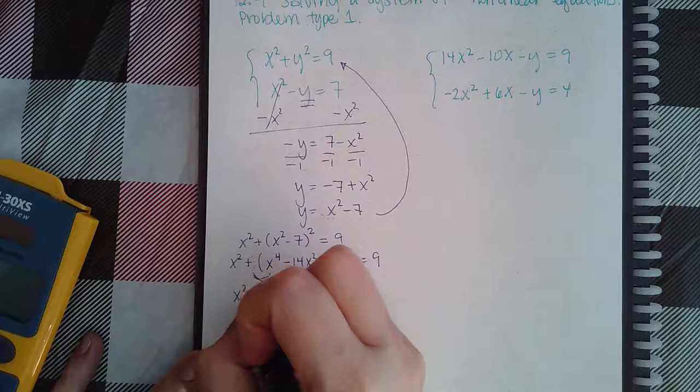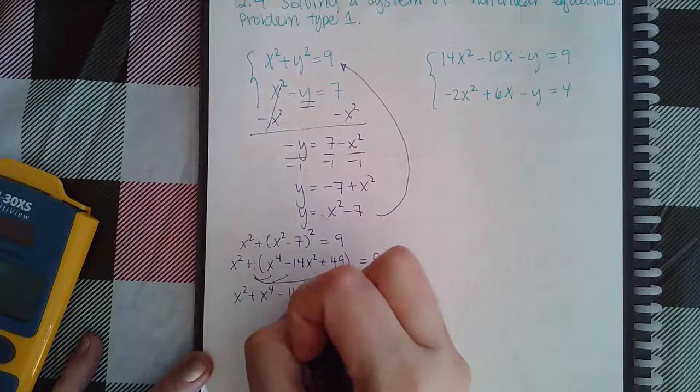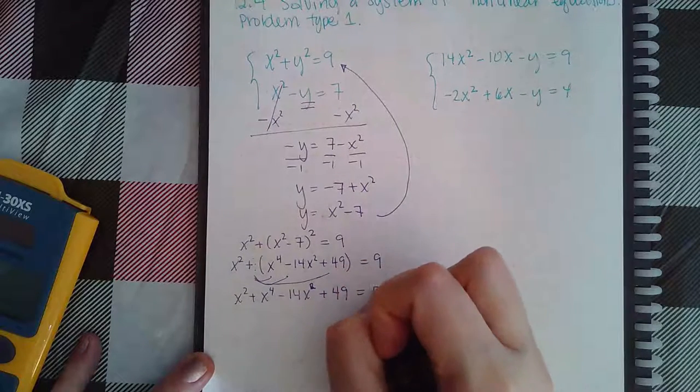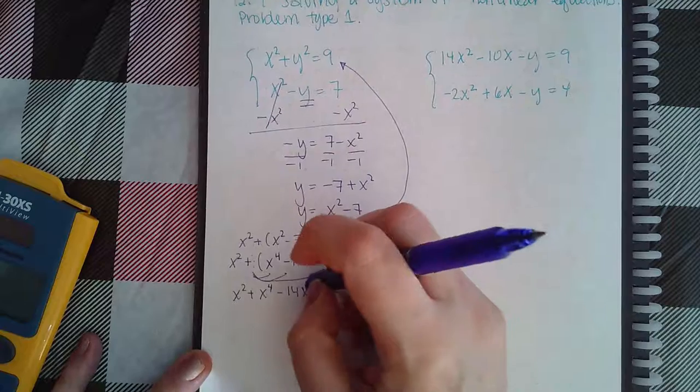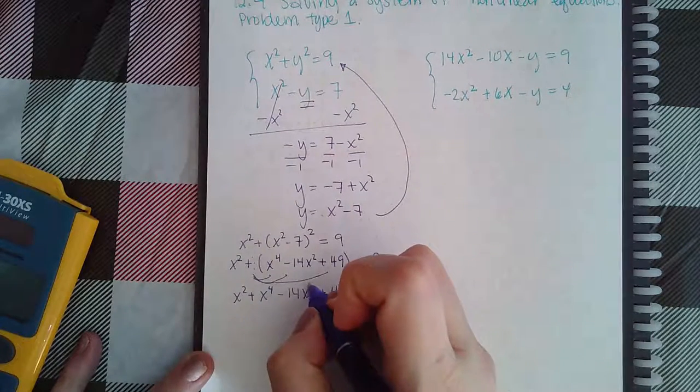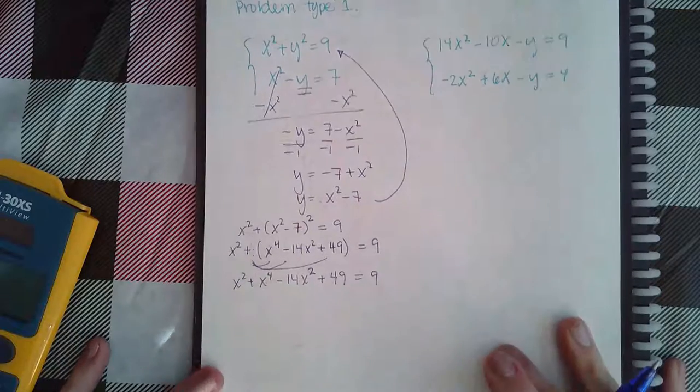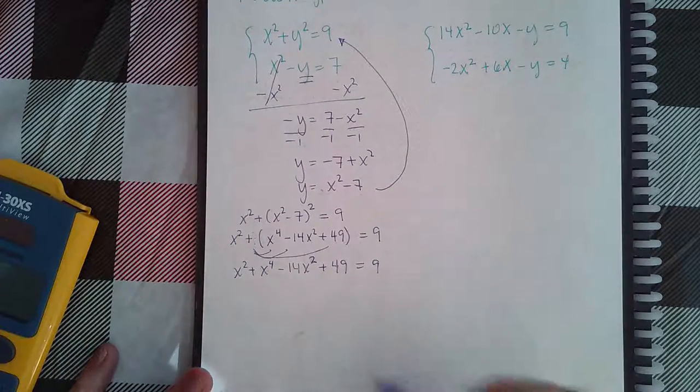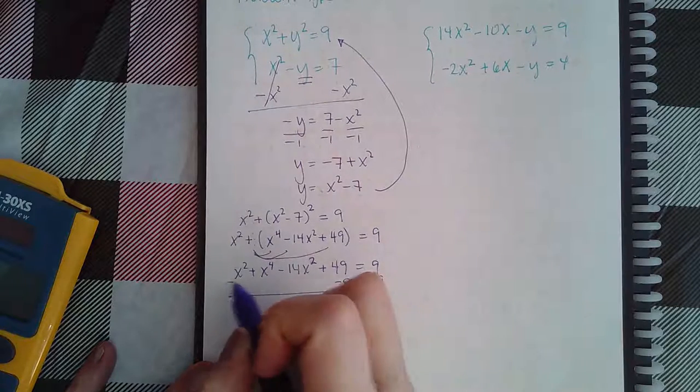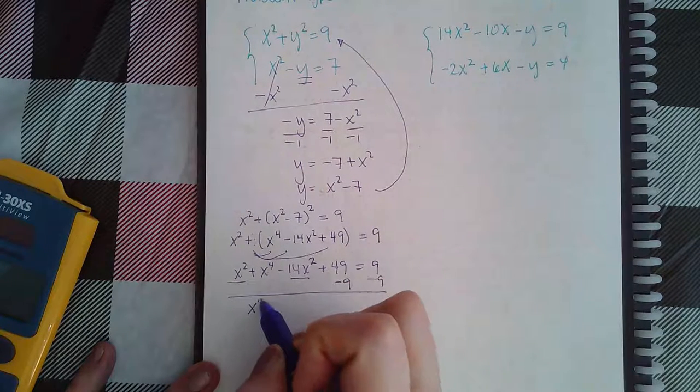Just to make sure you're on the safe side, put that squared term in parentheses and then decide later whether the parentheses are necessary. I'm going to combine my like terms and also minus this 9.